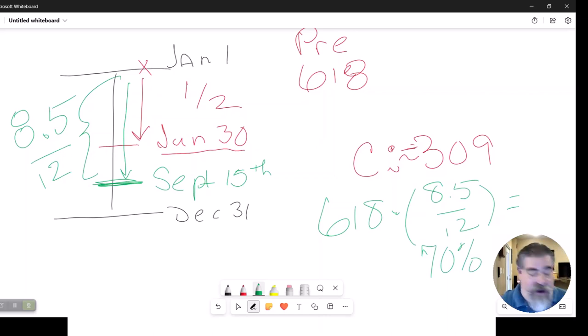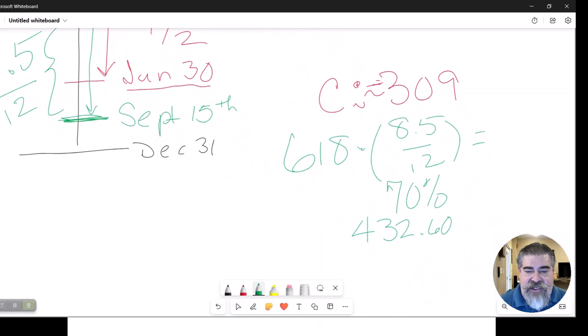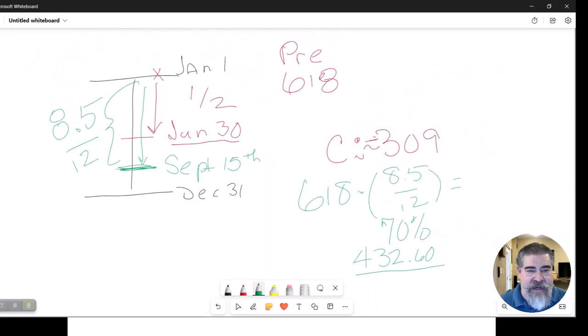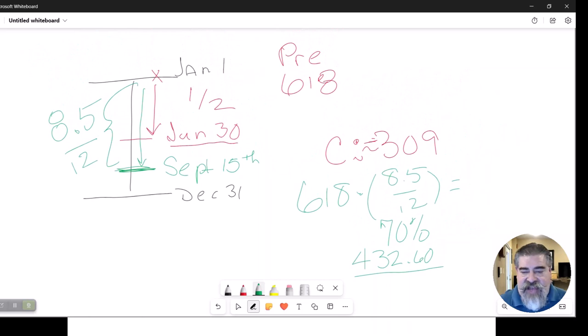Hey, Siri, what's 70% of $618? Times 618 is $432.60. So what you get is the proration is $432.60. If it was a prepaid, then the seller is going to get a credit of money.